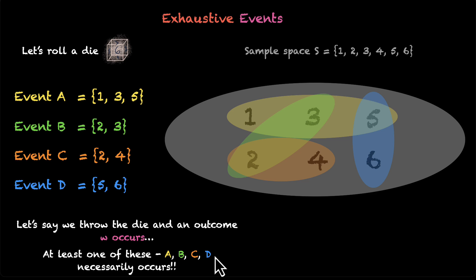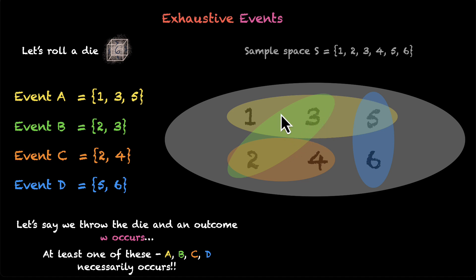Let's do an example. Let's say we throw the die and we get a 6. When we get a 6, event D has occurred. What about 3? When we get a 3, event B has occurred and event A has occurred. When we get a 4, event C has occurred, and so on. No matter what you get, one of these events will definitely and necessarily occur.